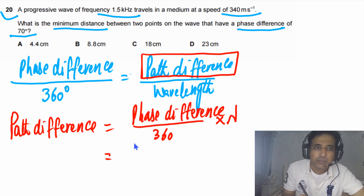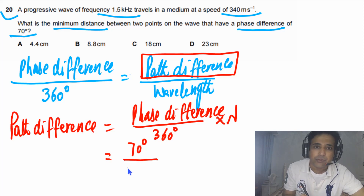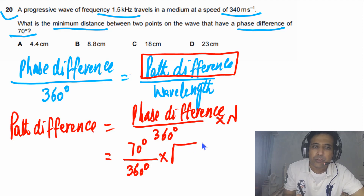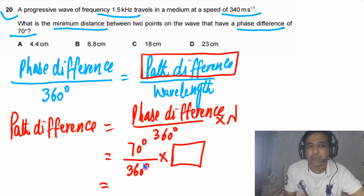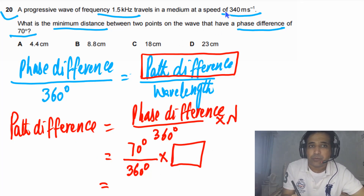The phase difference given is 70 degrees. You have to use this in degrees — if it is in radians, you can use radians. So we have 70 divided by 360 degrees multiplied by wavelength. We need the value of lambda first.